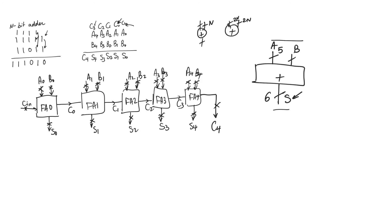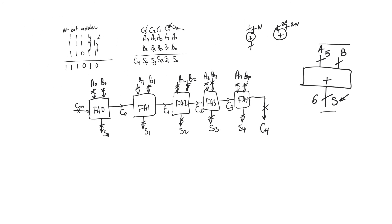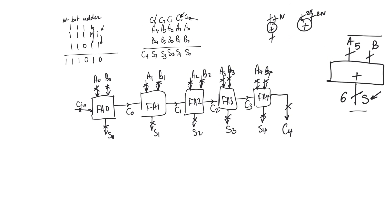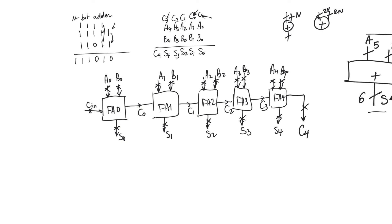Now, this means that we have to look at which bit in the output S is ready last — what is the longest delay between any of the inputs and any of the outputs. This is what we are generally going to do with any arithmetic circuit. And so, if you look at the first full adder, full adder 0, this full adder can start operation as soon as we start — as soon as we start operation, this can start calculating.